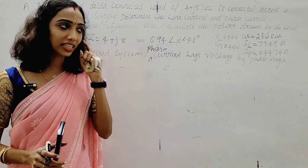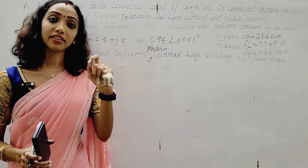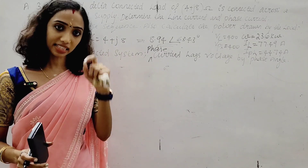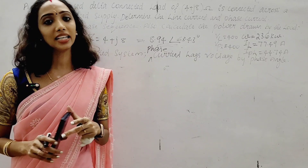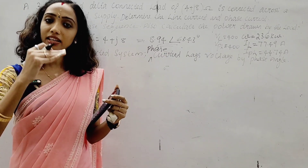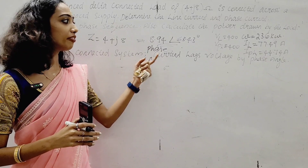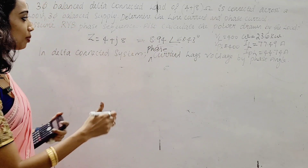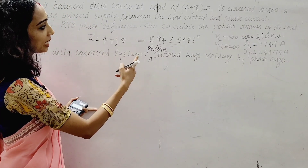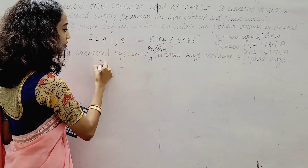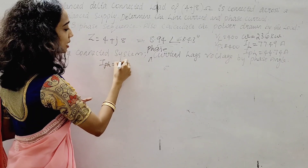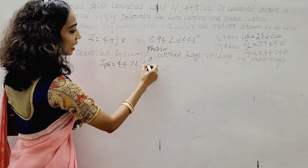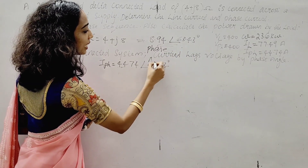In a delta connected system, phase current lags voltage by the phase angle φ. The line current lags the phase current by 30 degrees. Phase current I-phase is 44.74 at angle minus 63.43 degrees lag for the RYB phase sequence.